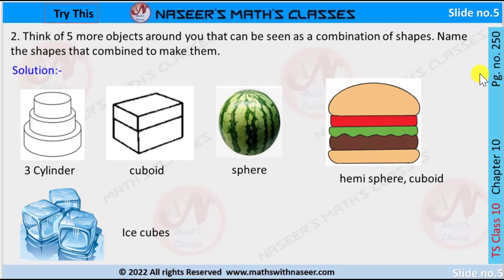Try this, page number 250, Chapter 10, Mensuration. Second problem: think of five more objects around you that can be seen as a combination of shapes. Name the shapes that combine to make them. First one, this is a cake, it has three cylinders.